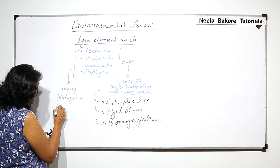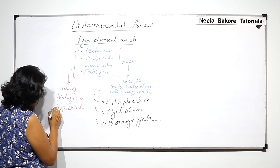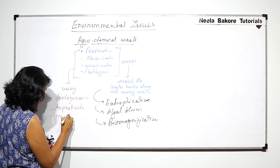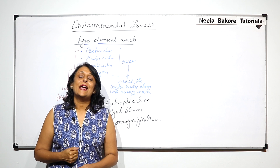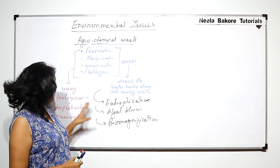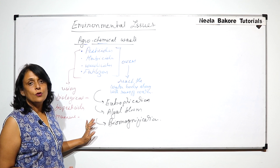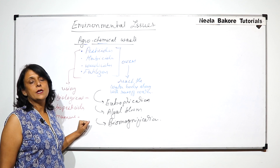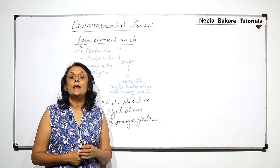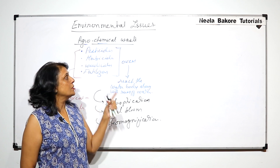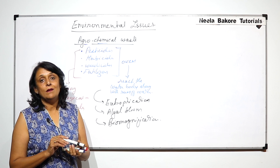Using biopesticides and manure — if we switch from chemicals to organic substances, even if used in excess they will be decomposed by microbes. So they are not going to cause any damage or result in any pollution. This is one way of dealing with agrochemical waste.